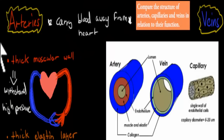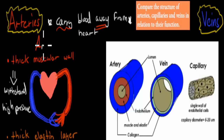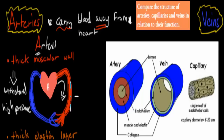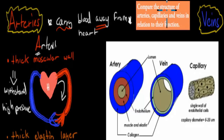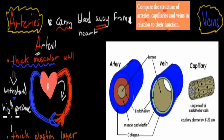Arteries carry blood away from the heart — think 'A for away.' When the heart pumps, blood leaving it is carried in arteries, travels through capillaries, then returns to the heart through veins. Arteries have very thick walls, and the reason is they have to withstand high pressure from the heart pumping. If the walls weren't strong enough, they would rupture and create holes.